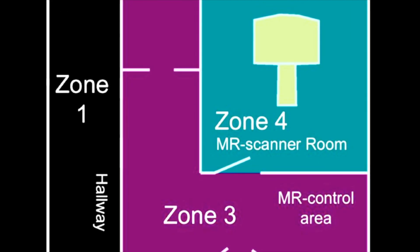The last zone is Zone 4. This is where the magnet is located. Access to Zone 4 should only be possible by passing through Zone 3. The walls of this magnet room are designed to contain the 5 Gauss line of the fringe field of the magnet. 5 Gauss is equivalent to 0.5 millitesla — we'll learn more about that later.